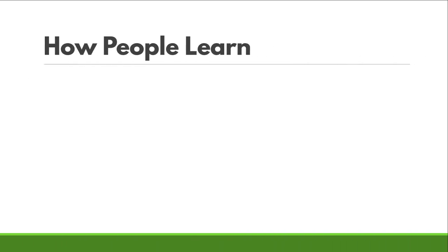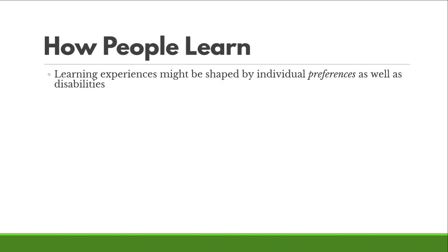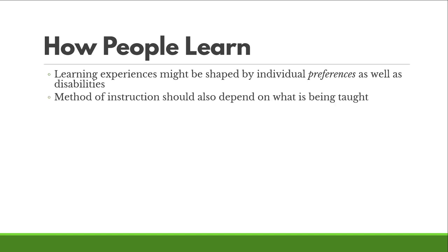Experiences might be shaped by preferences as well as disabilities. If you have a disability, there are going to be some ways you physically can learn better than others. But the instruction should depend on what is being taught. If you're teaching someone math, they have to do math — you can't just show them a bunch of problems on a board and then expect them to magically be capable of working through problems on their own. They actually have to sit down, work through math problems, get them wrong, and figure out how to do it right. That's kinesthetic, sure, but that's not a learning style — that's dependent on the subject being taught and how it's best learned.